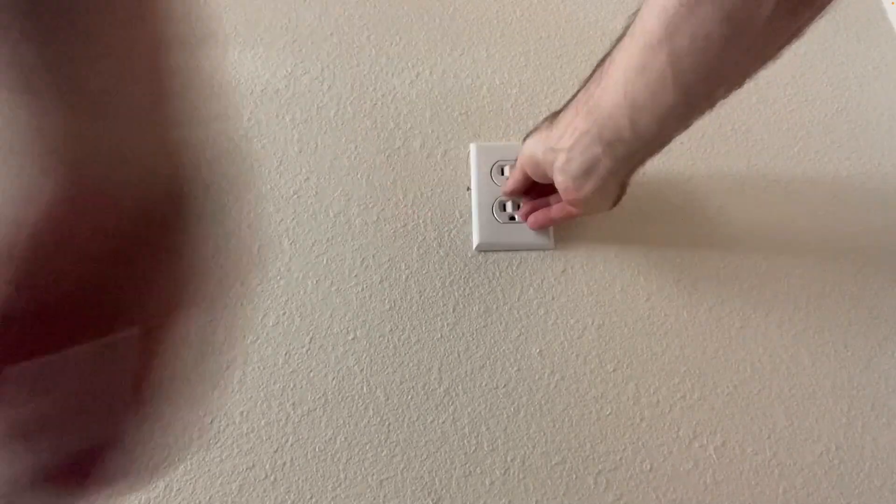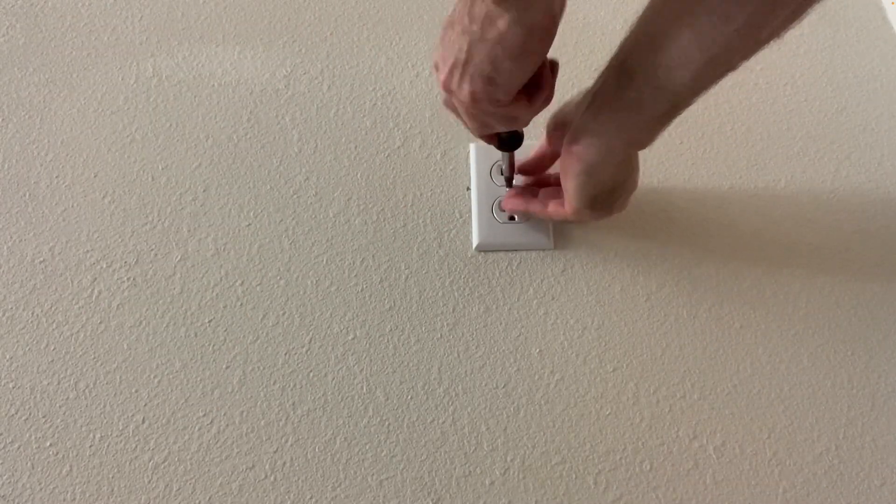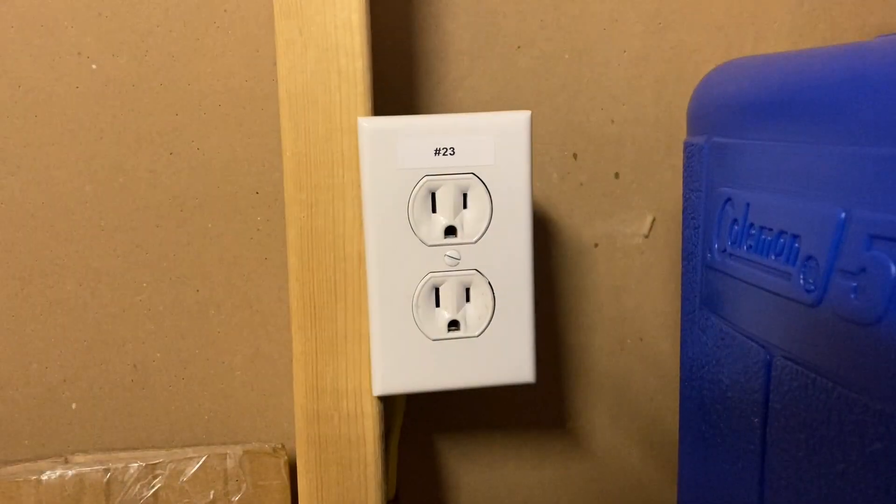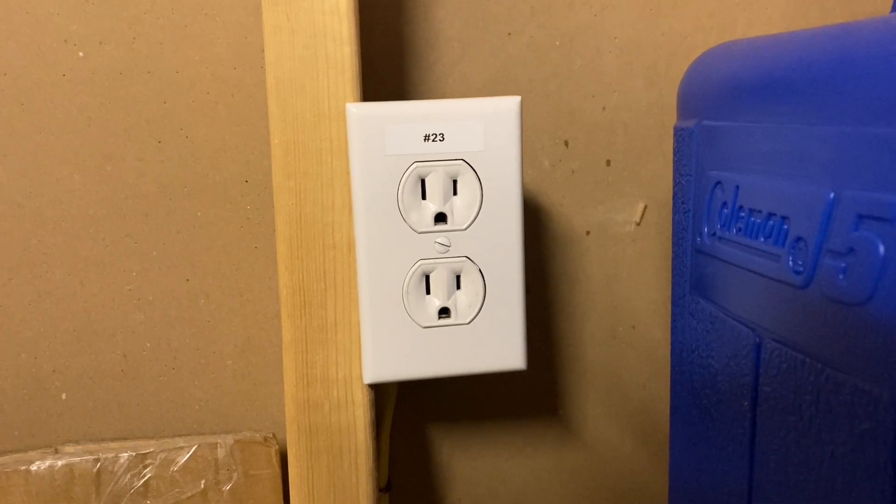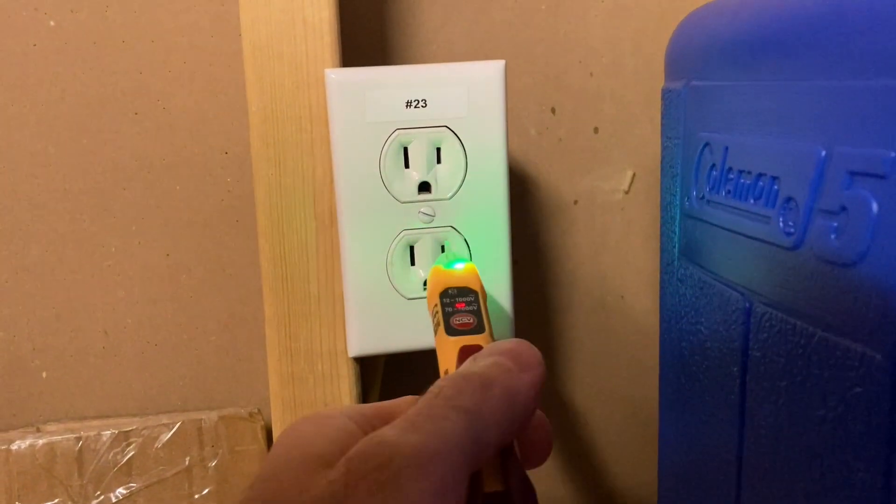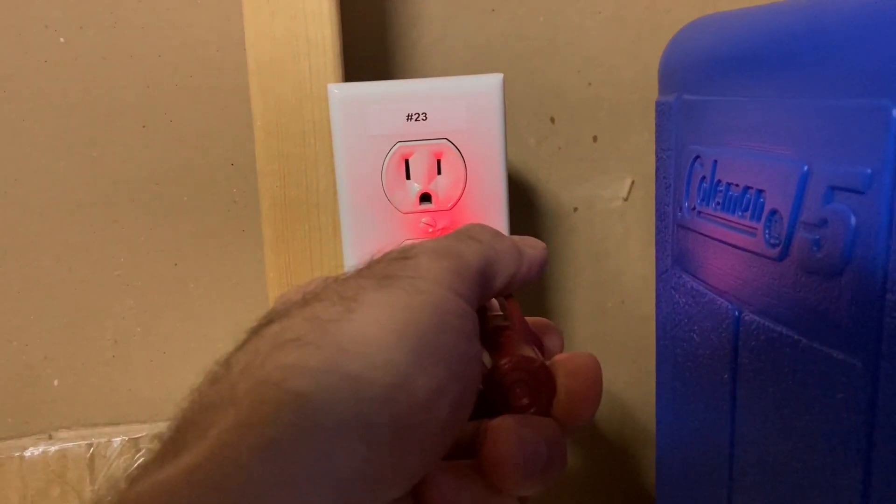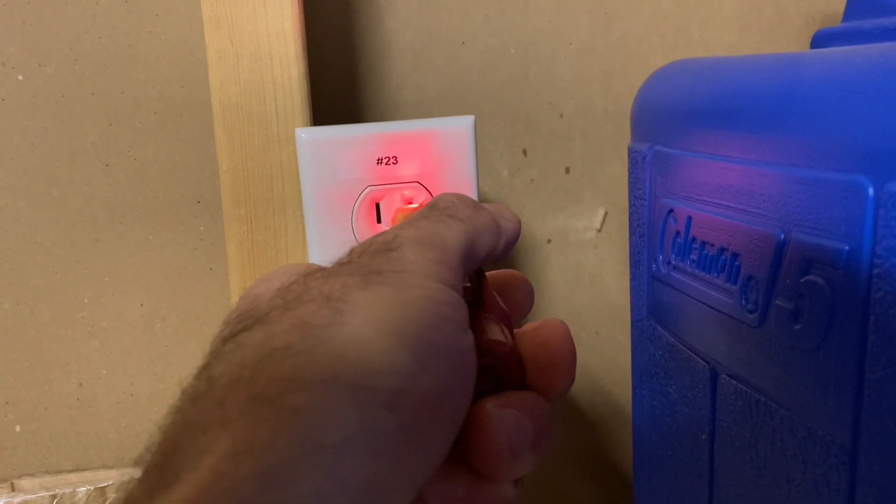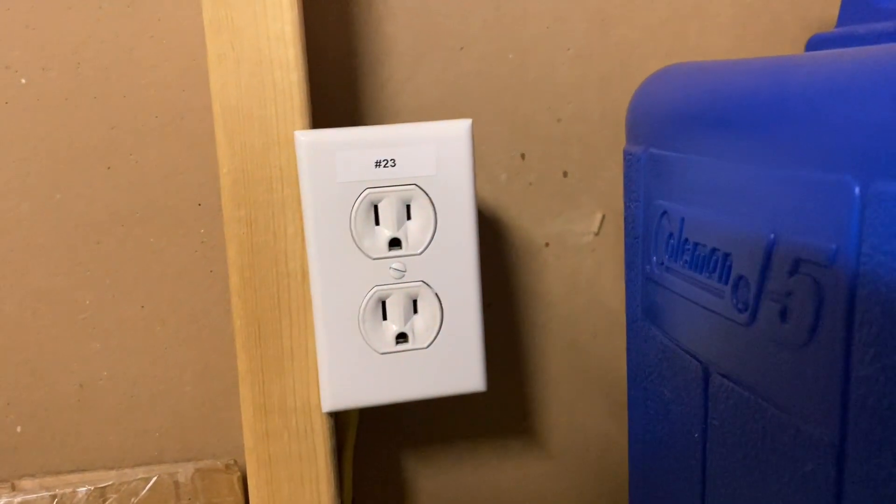Reinstall our cover plate. Again, you can see here the cover plate and the outlet are properly flush with each other. I recommend labeling the receptacle with what circuit breaker provides power to it. Turn your breaker back on and check your new outlet for power. I hope this information helps you.